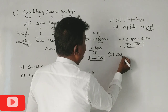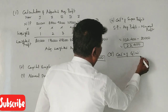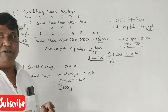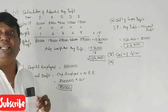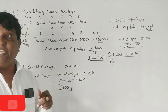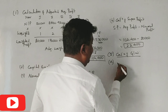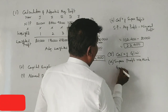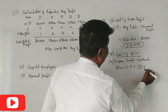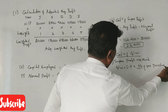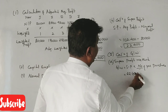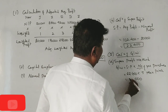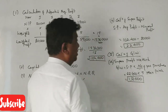The next step is the calculation of goodwill. Under the super profit method, goodwill = super profit × number of years of purchase. Super profit is 22,400 and the number of years is 5. So goodwill = 22,400 × 5 = 1,12,000. This is the goodwill under the super profit method.